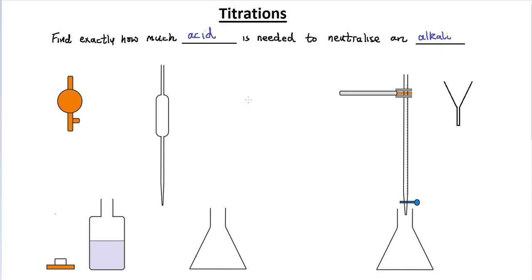Before we look at the procedure, let's identify some of the apparatus that we're going to use. This is the pipette, and we're going to use that to transfer some of our alkali to this conical flask.